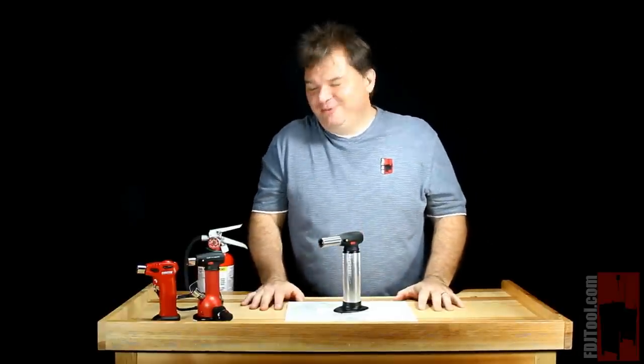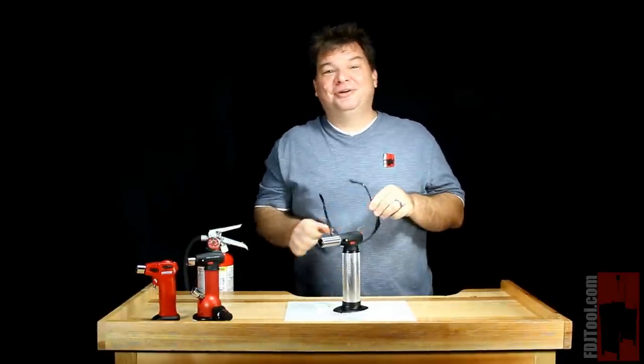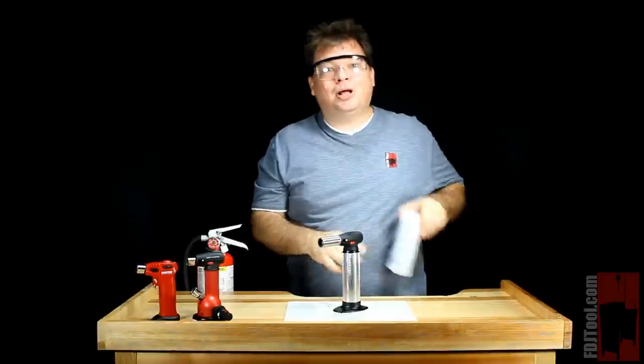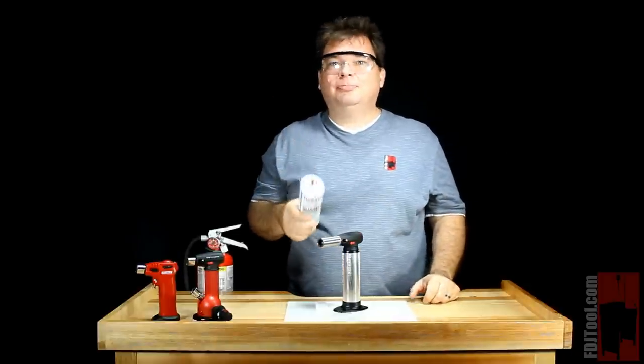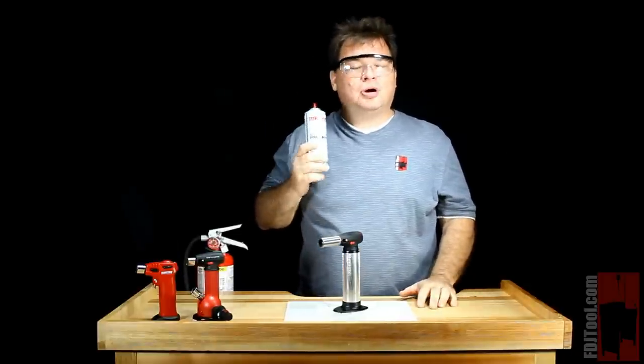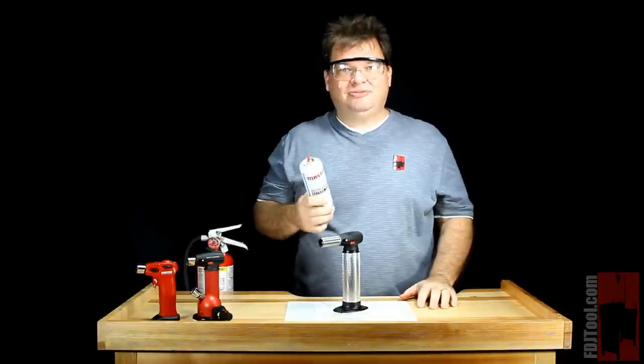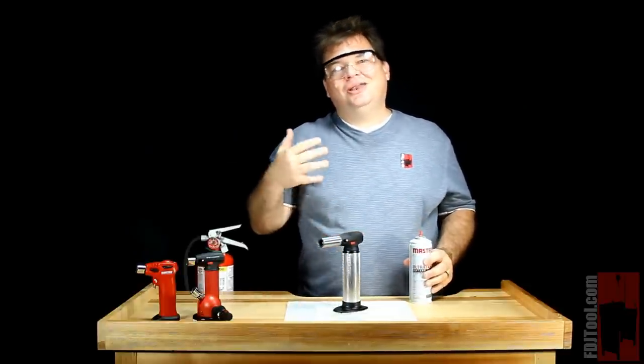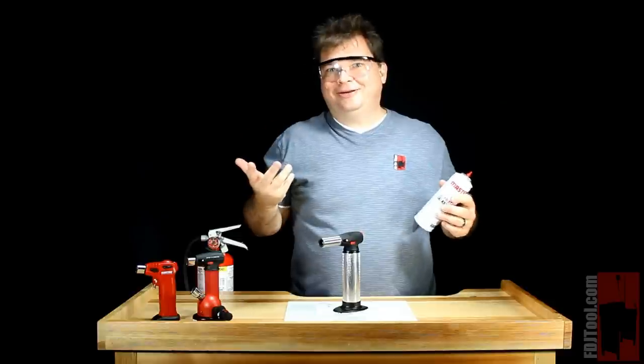To fill the Jumbo Max Flame, we're going to do it basically the same way you do any other butane torch. You need to get yourself some good quality butane. We use Ultratane here, but as long as you use some sort of good quality triple refined butane, you should be fine. Anything of a lesser quality will probably end up gumming up your torch, and it's going to make it useless, and that's not a good thing.